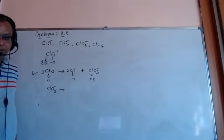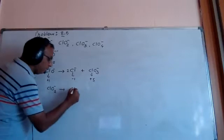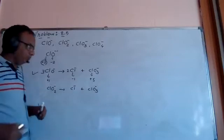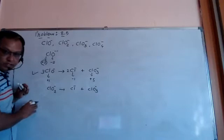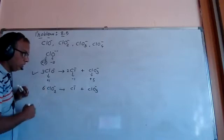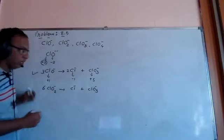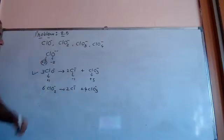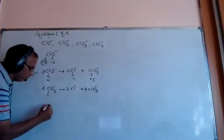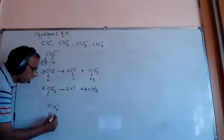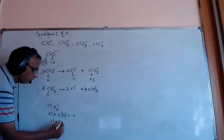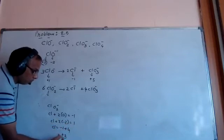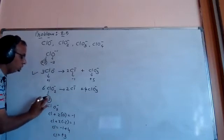Next is ClO₂⁻. This can also decompose to give Cl⁻ and ClO₃⁻. To balance the equation, we need to balance the oxygens — using coefficients of 6 and 4 gives twelve oxygens on each side. The oxidation number in ClO₂⁻: oxygen is minus two times two equals minus four, so chlorine is plus three.